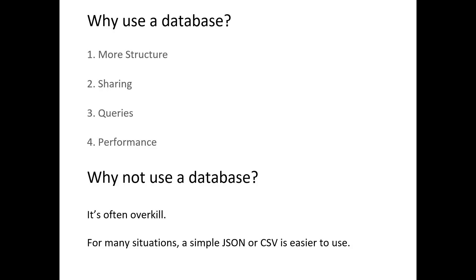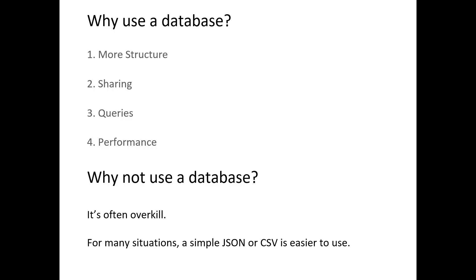Those were some advantages of choosing a database. Now let's talk about why we might not want to use one — why we might choose something simpler. Databases are complicated and often overkill. If we only have a hundred items in our CSV table, both will perform blindingly fast — nanoseconds — and we can't tell the difference. For many situations, JSON files and CSVs are simpler and easier to use. It depends on the question we're asking and how big our data set is. Really large data sets, we'll want to take advantage of database performance, but we may not need that extra complexity.